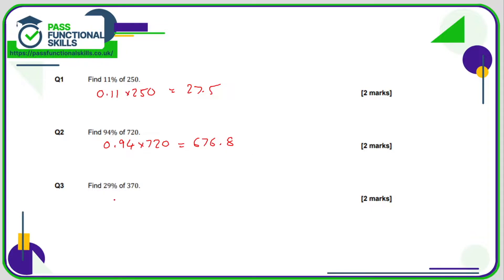29% of 370. That's 0.29 multiplied by 370. And that comes to 107.3.